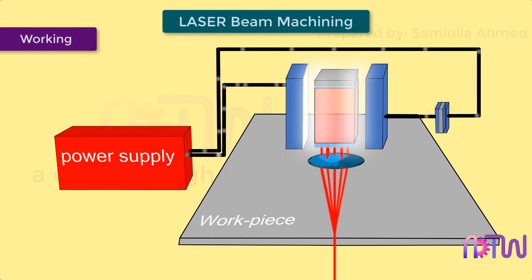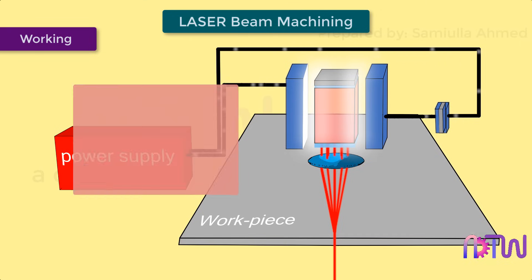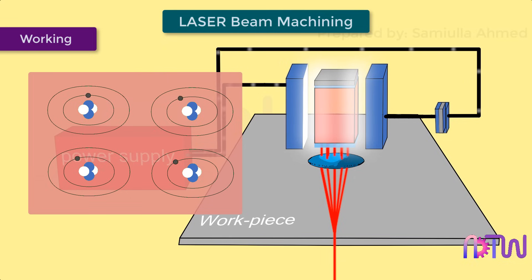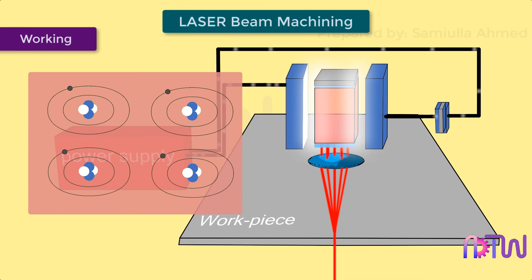Working: when the switch is turned on, a high-voltage power supply is applied across the flash tube surrounding the pumping medium — in our case, a ruby crystal. As the light powers on, it emits high-energy photons, which are absorbed by the ruby crystal. This absorbed energy causes most of the electrons in the atoms of the ruby crystal to be excited to a high energy level from their ground state.